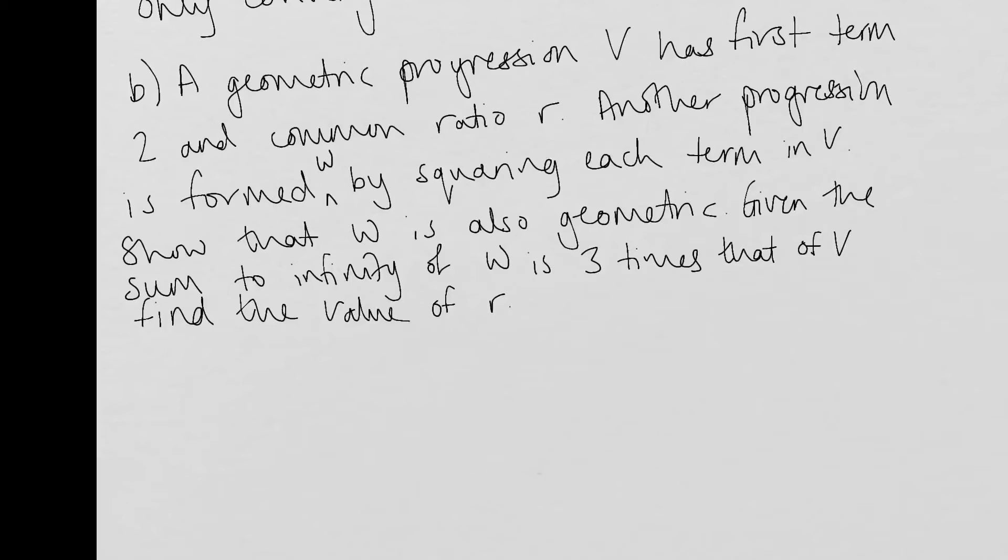Another progression is formed, we're going to call this one W, by squaring each term in V. Show that W is also geometric. Given the sum to infinity of W is three times that of V, find the value of R. OK, there's so much to read there and try to decipher. It really does take time. So let's focus on just the first sentence.